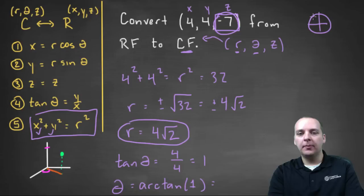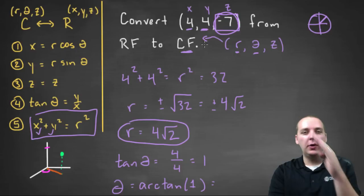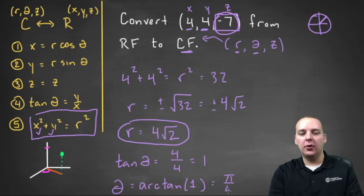So on the unit circle, where is tangent equal to one? Or in other words, where is sine and cosine the same, so that the tangent would be one? I think that's forty-five degrees. And that kind of makes sense, doesn't it? If the X is four and the Y is four, that would be on that forty-five degree type of line right there. So that'll be forty-five degrees, or pi over four, which I like that better than a decimal approximation right there.